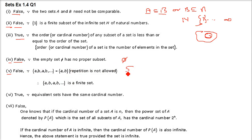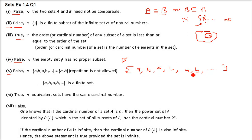Next statement: {A, B, A, B, A, B, ...} is an infinite set. In set theory, repetition is allowed, so we can write this as just {A, B}, which is a finite set. So this becomes false — because repetition is allowed, the set is actually finite.